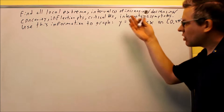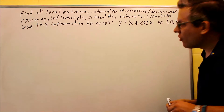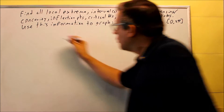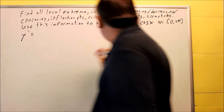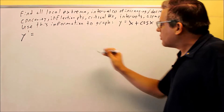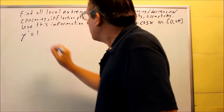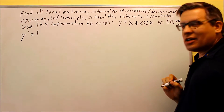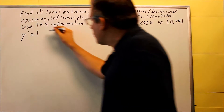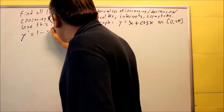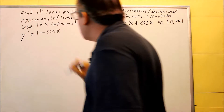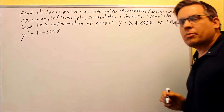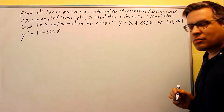Let's start with the first derivative. The derivative of x is 1, and the derivative of cosine is negative sine. So we get f'(x) = 1 minus sine x.